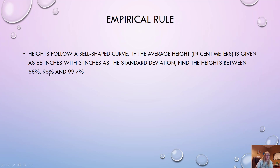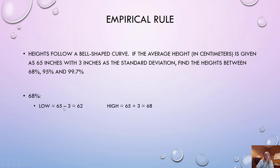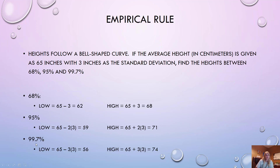The empirical rule is very, very important — I stress this to students in every stats class. One standard deviation below and above the mean covers 68% of your data. Two standard deviations covers 95%. Three standard deviations covers 99.7%. So with a given mean and standard deviation, 68% falls between mean minus one SD and mean plus one SD.